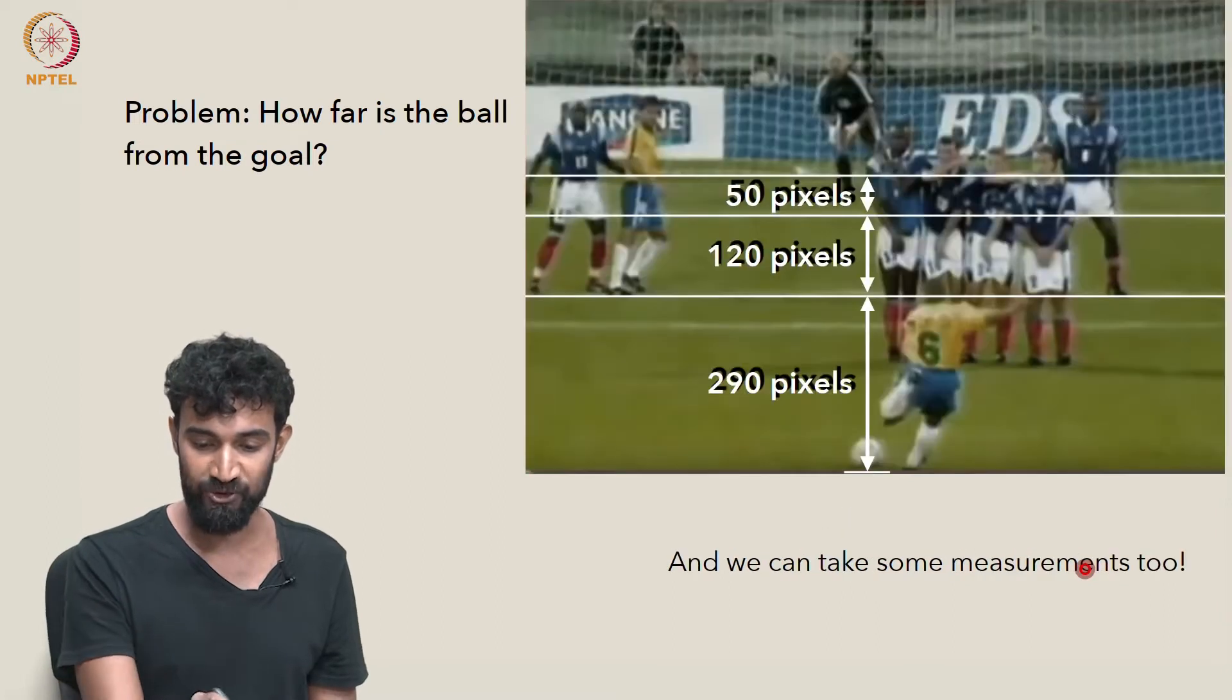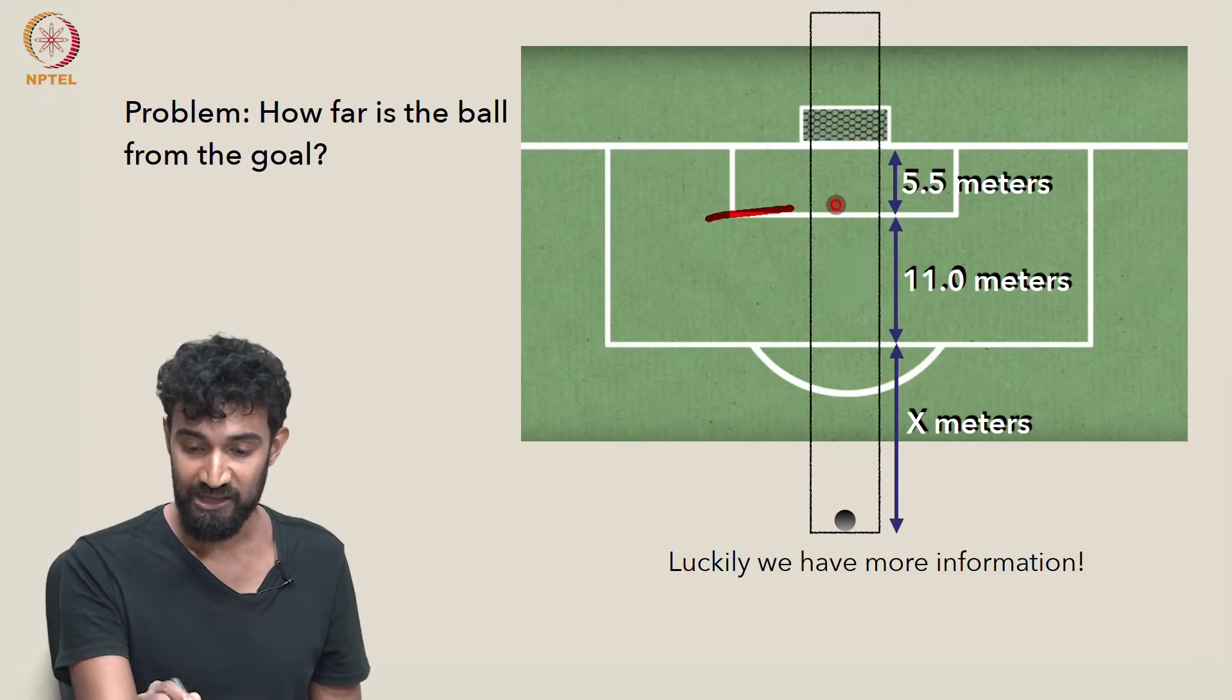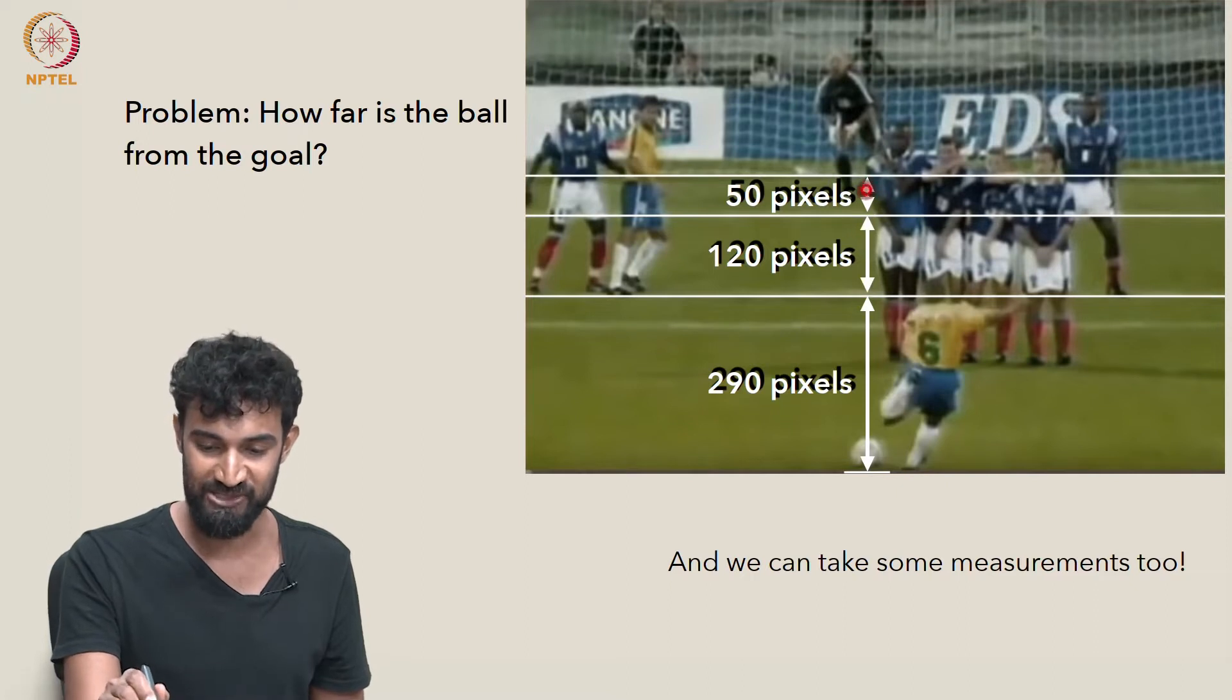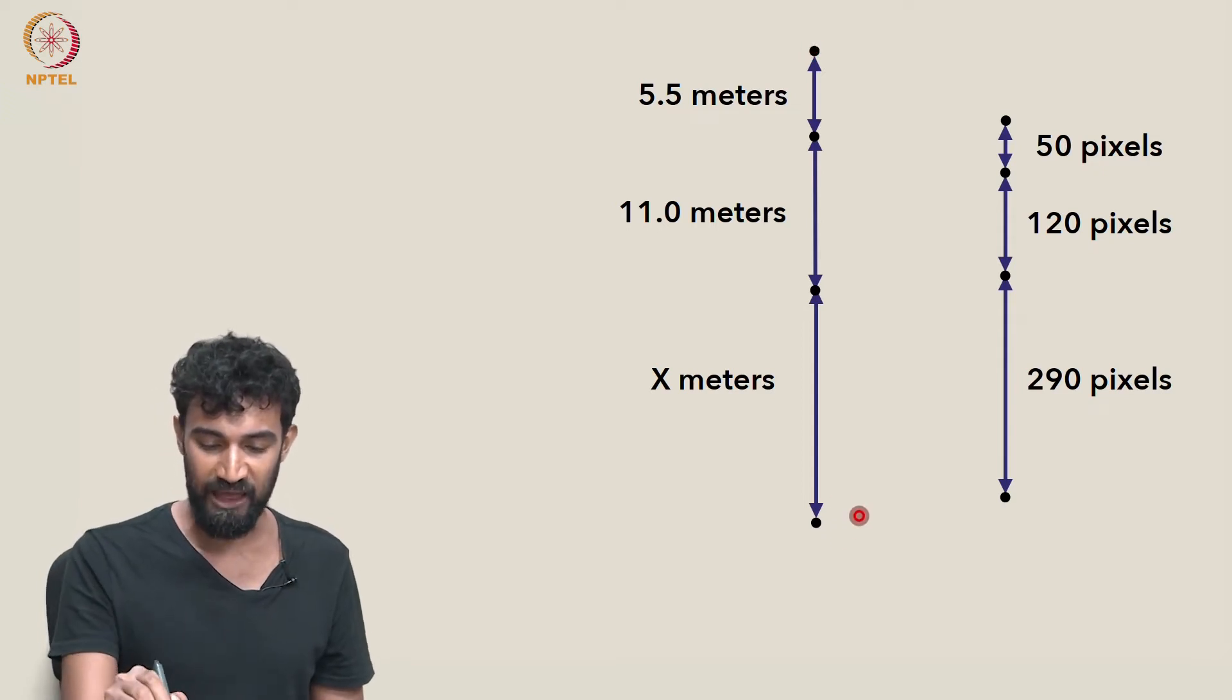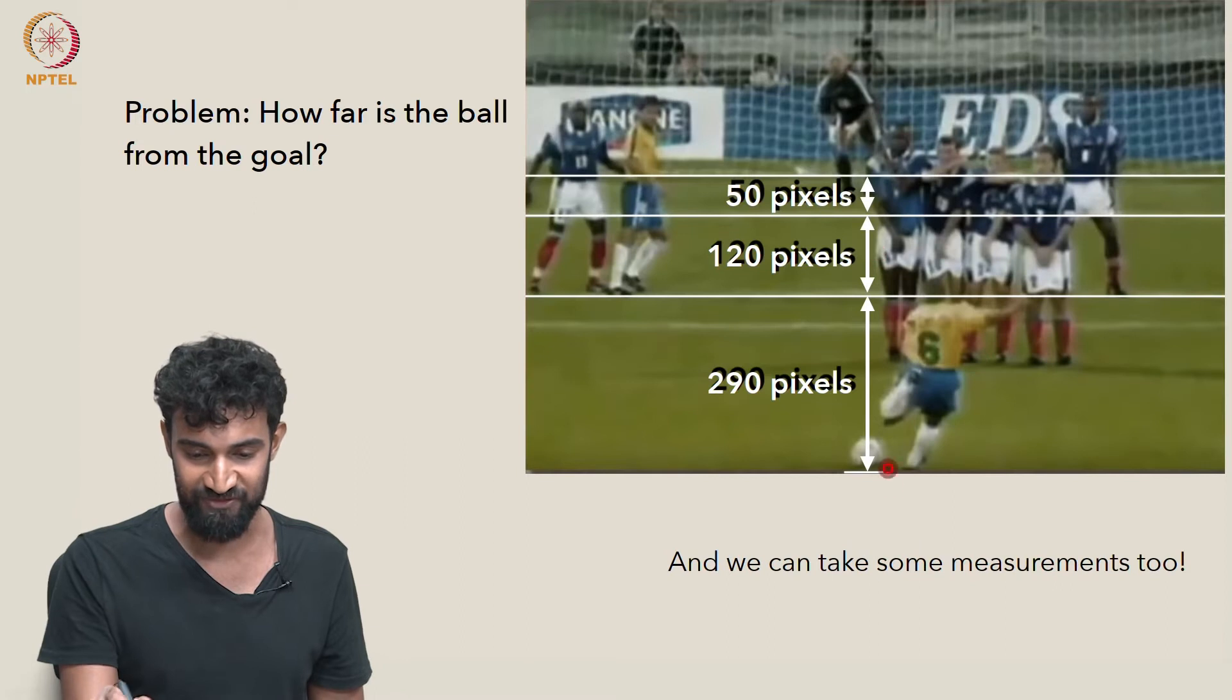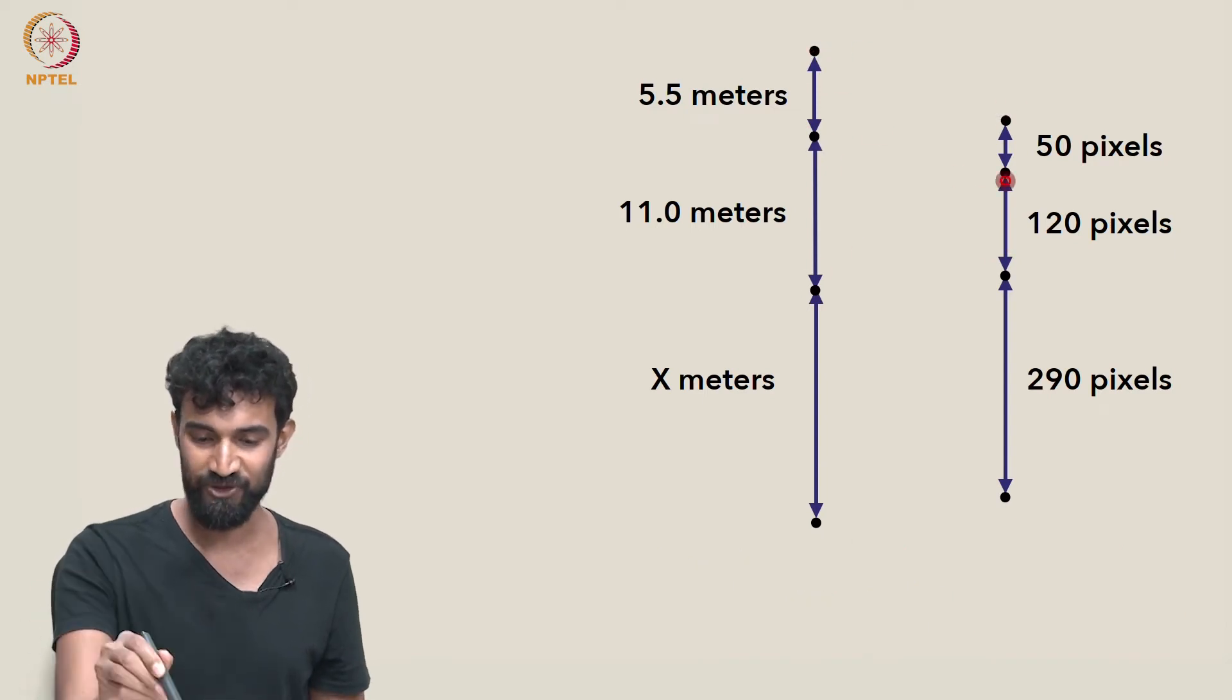So drawing those lines on the photograph, we can take even more measurements and get even more information. We can look at these corresponding lines in the photograph, and we can measure the pixel distance between them. So it's 50 pixels between these lines, 120 pixels between these lines, and 290 pixels between these lines. So in other words, we have meters on the one hand from this image, and we have pixels on the other hand from this image. And we also know that these represent the same things. This is a photograph of this.